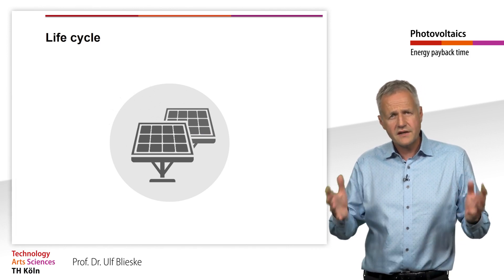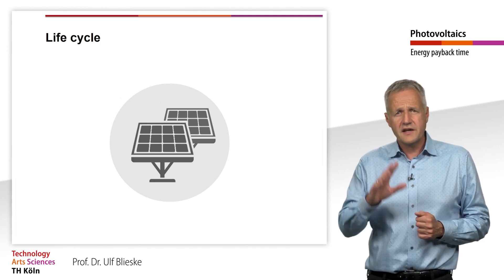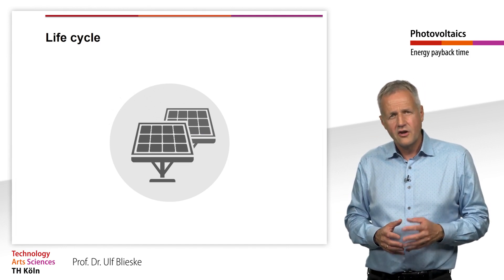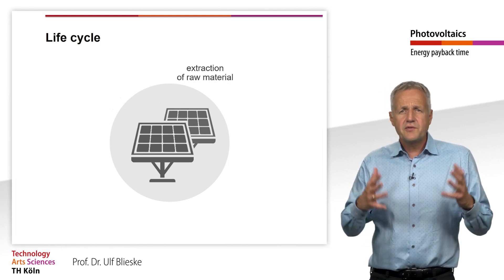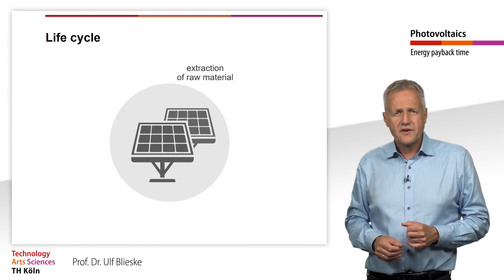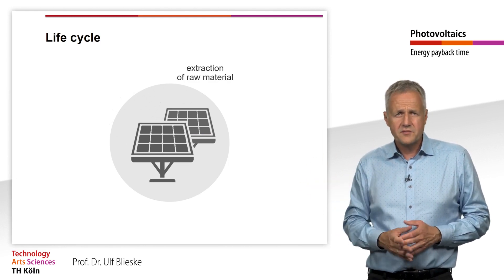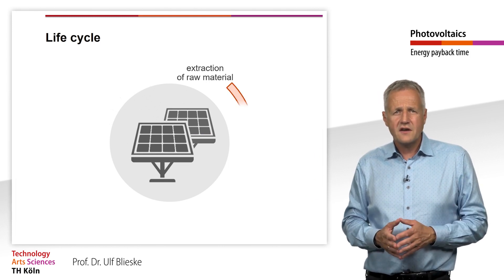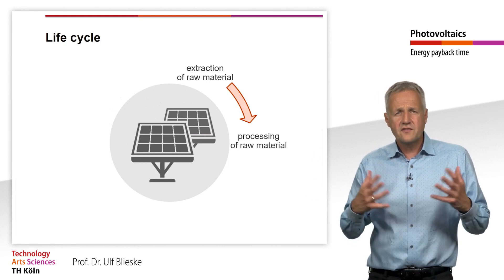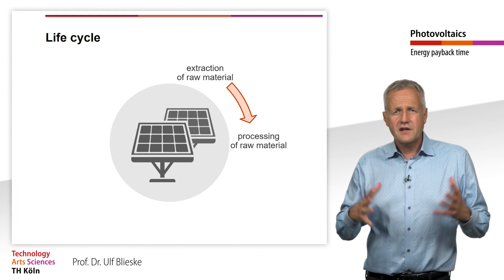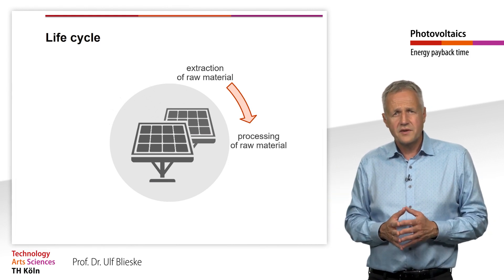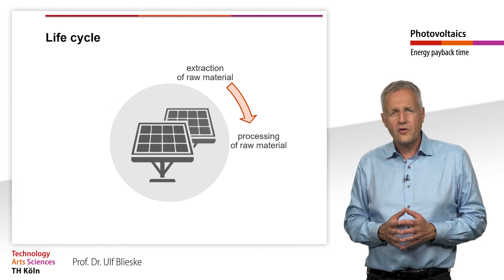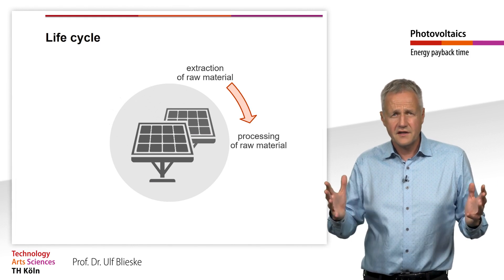We can divide the life cycle of a photovoltaic system into the following sections. First, the energy required to extract all the raw materials needed must be taken into account. These raw materials are then processed further. A particularly energy-intensive step here is, for example, the production of mono or polycrystalline ingots.